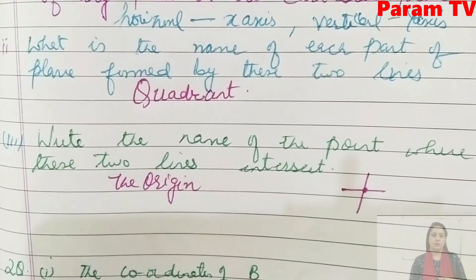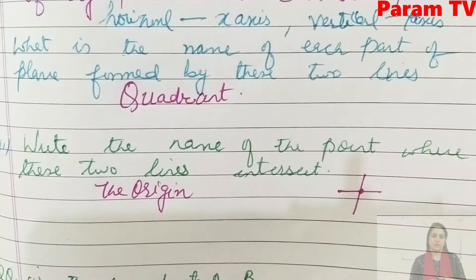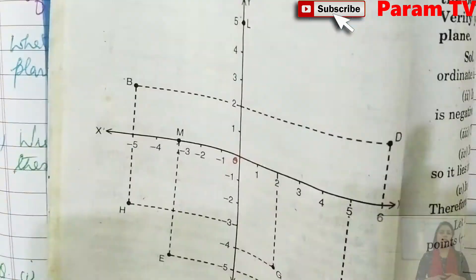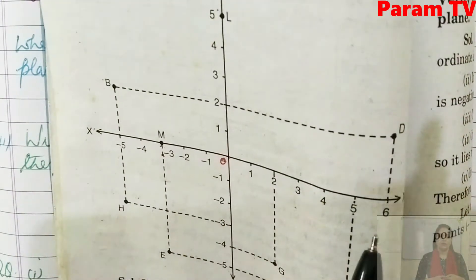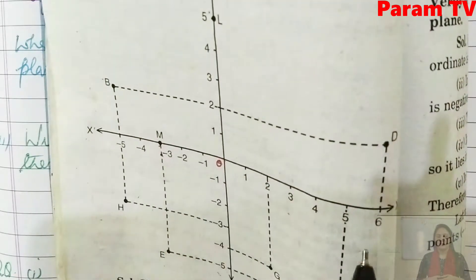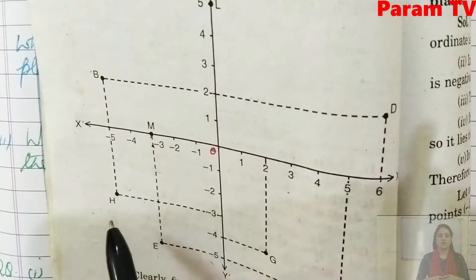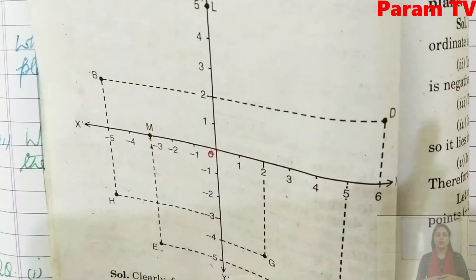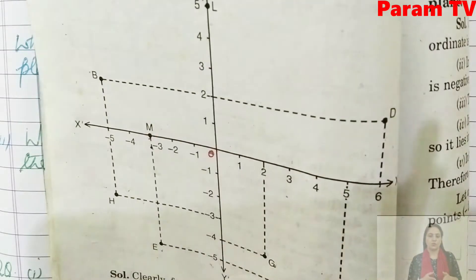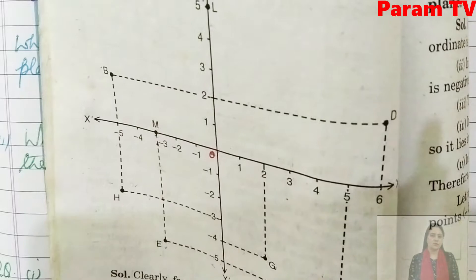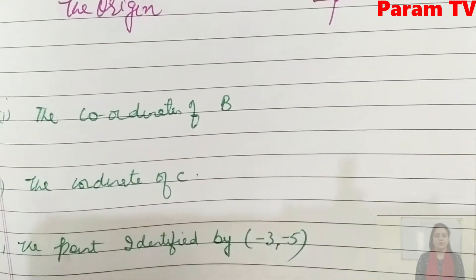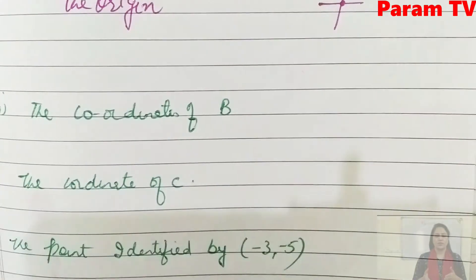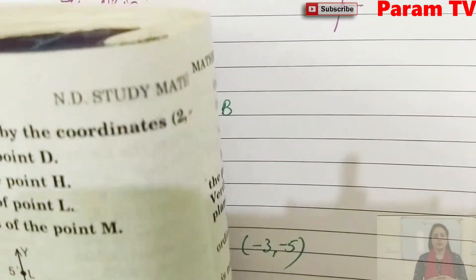Now let's move to the second question. In the second question, you are given a figure. Let's look at it from the book. Here is the y-axis, x-axis, and some points are given: D, B, H, E, C, G, and L. You have to solve some questions. Keep looking at the figure from the book. The first part is: what are the coordinates of B?